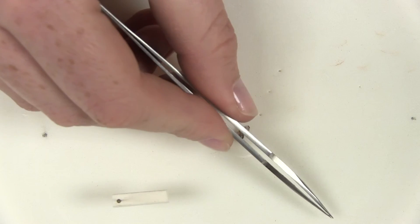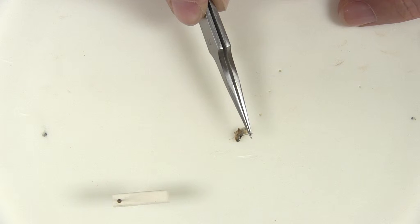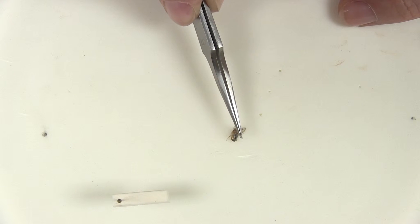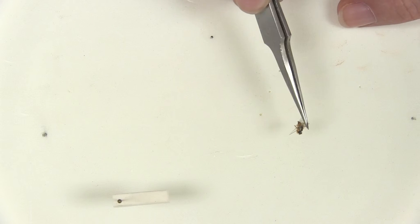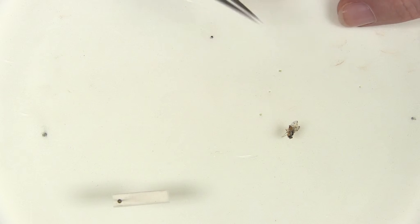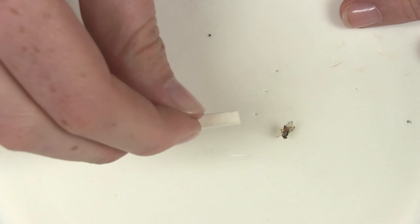Carefully insert the micro pin into the lateral side of the thorax of the fruit fly at a 45 degree angle, making sure not to pierce the legs or wings of the insect. The insect should be pinned three quarters of the way from the top of the micro pin.